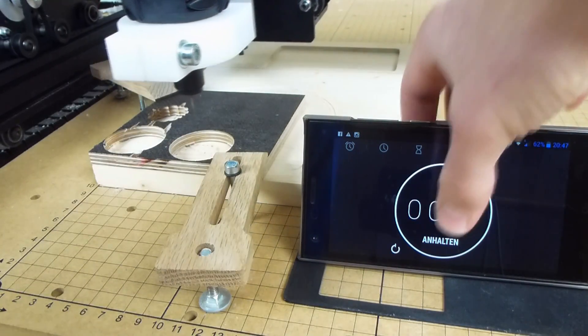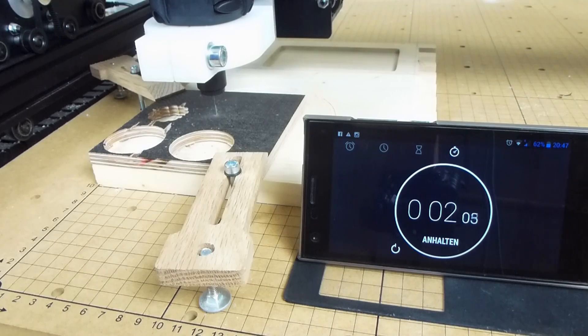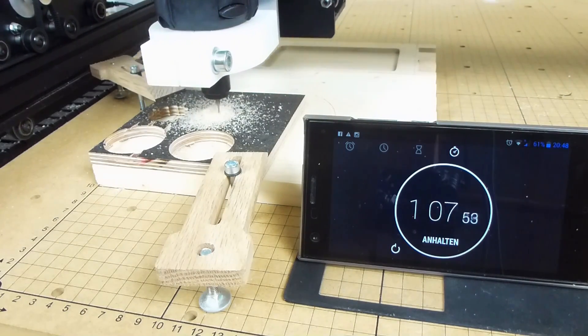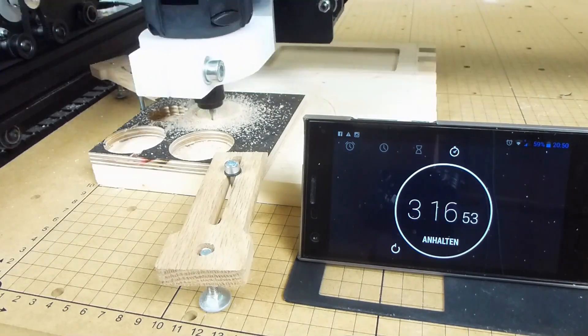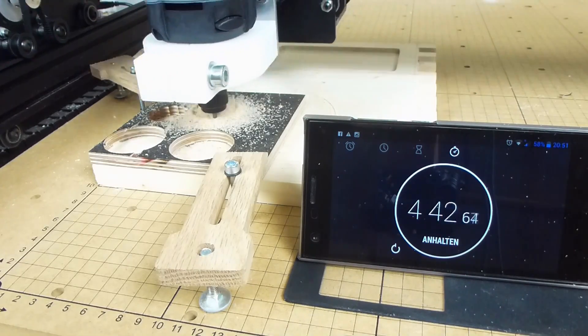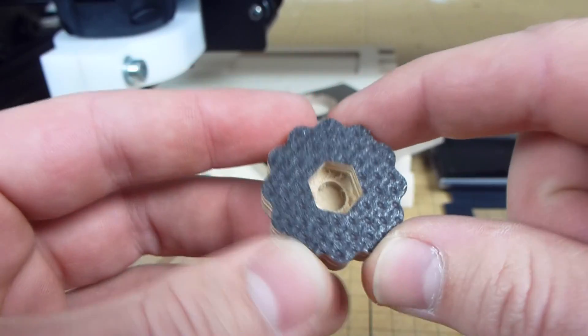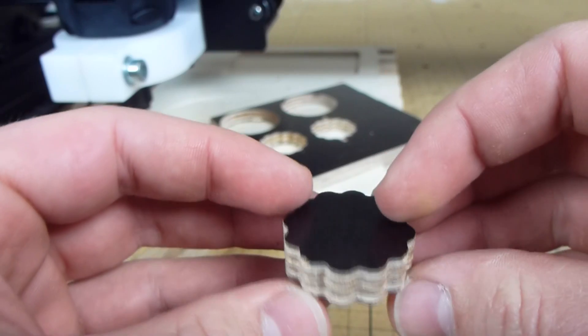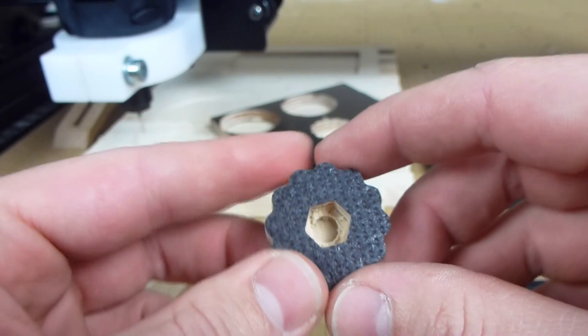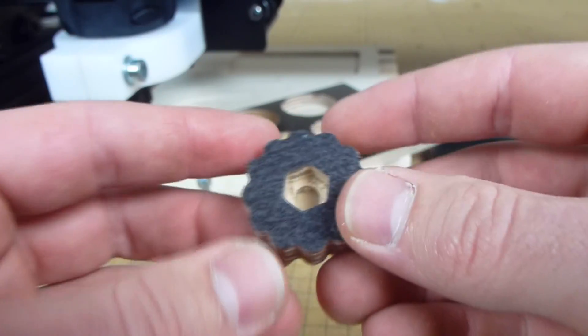Just for fun I let a stopwatch run during the milling, and it took about just under 6 minutes. I think it could go a lot faster but I first have to get used to this new spindle.